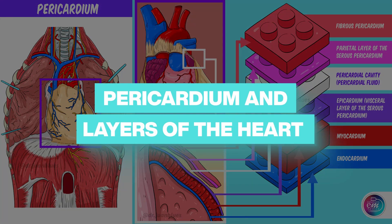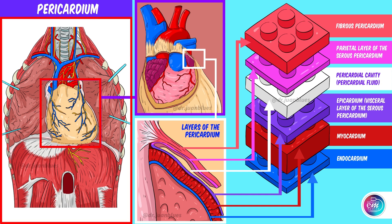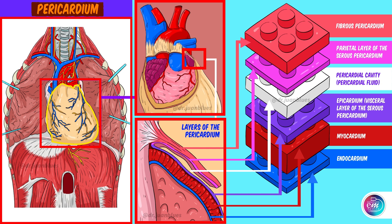The pericardium and the layers of the heart. A fundamental aspect that we must understand is that the heart is not naked in the thoracic cavity; rather it is covered by a fibrous membrane known as the pericardium. If we look closely, taking a cut at the level of the pericardium and zooming in, we can see that the pericardium is divided into layers, and that these layers are related to the layers that form the walls of the heart.